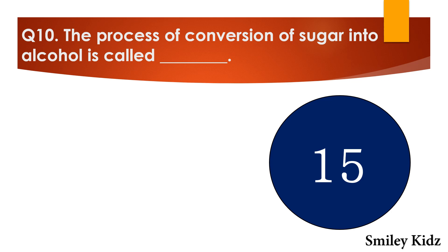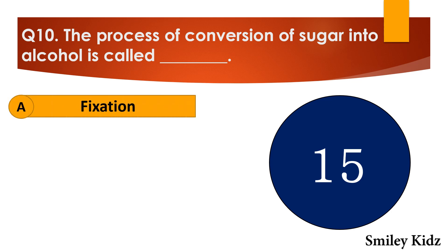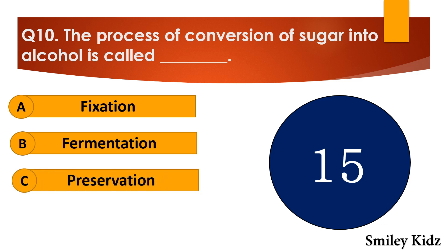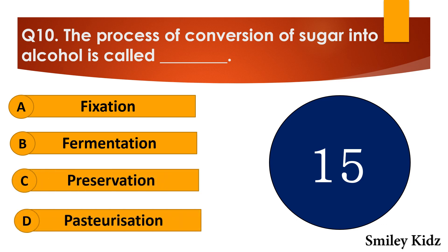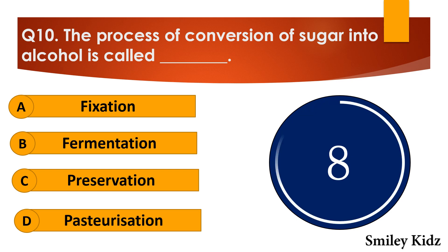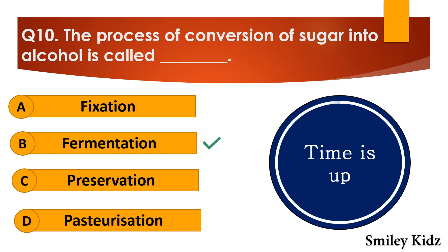Question number ten: The process of conversion of sugar into alcohol is called dash. The options are: A. Fixation, B. Fermentation, C. Preservation, or D. Pasteurization. Your time starts now. Your time is up and the right answer is option B — fermentation. The process of conversion of sugar into alcohol is called fermentation.